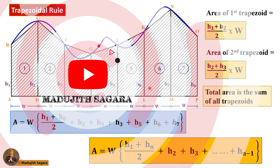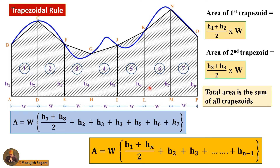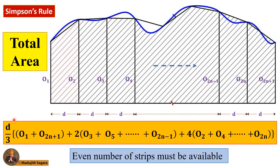Here you can see the corresponding equation of the trapezoidal rule. This h is the height of one ordinate and this width is the width of one ordinate. If you need to apply the trapezoidal rule, each and every interval must be the same, otherwise you will not be able to use it. You have to go to my trapezoidal rule specific video to get the exact knowledge of the trapezoidal rule.